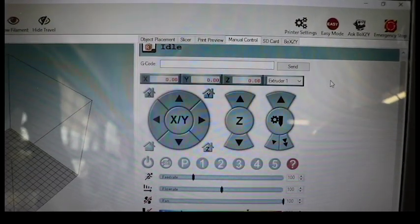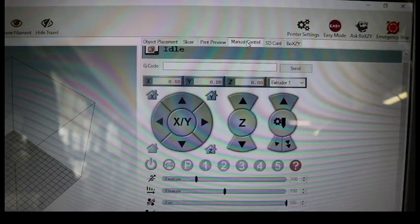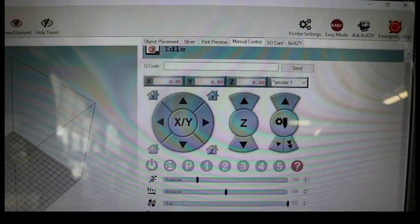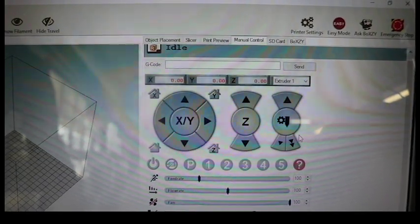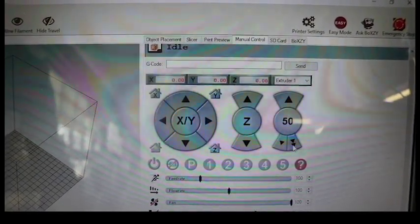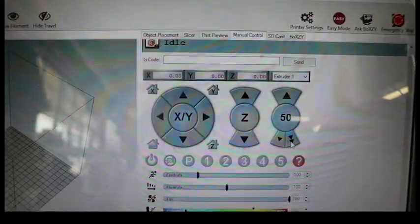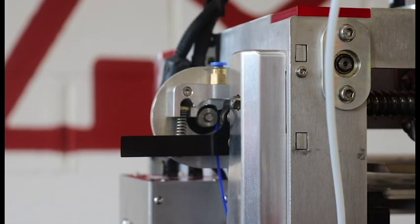So while you're holding your filament in place, you're going to want to go into your interface. So under our manual control tab here, we are going to use this icon on the far right to manually extrude some filament through the filament drive. So using the controls in the interface, the filament should feed through.